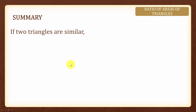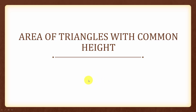In summary, if two triangles are similar, then A1 over A2 is equal to L1 over L2 squared. Next, we will look at area of triangles with common heights.